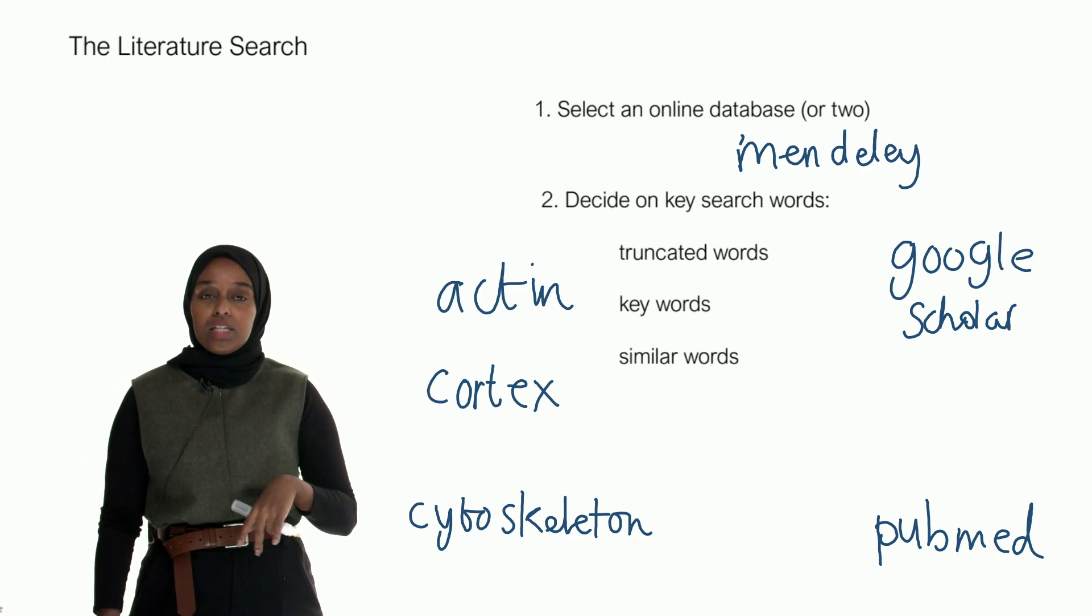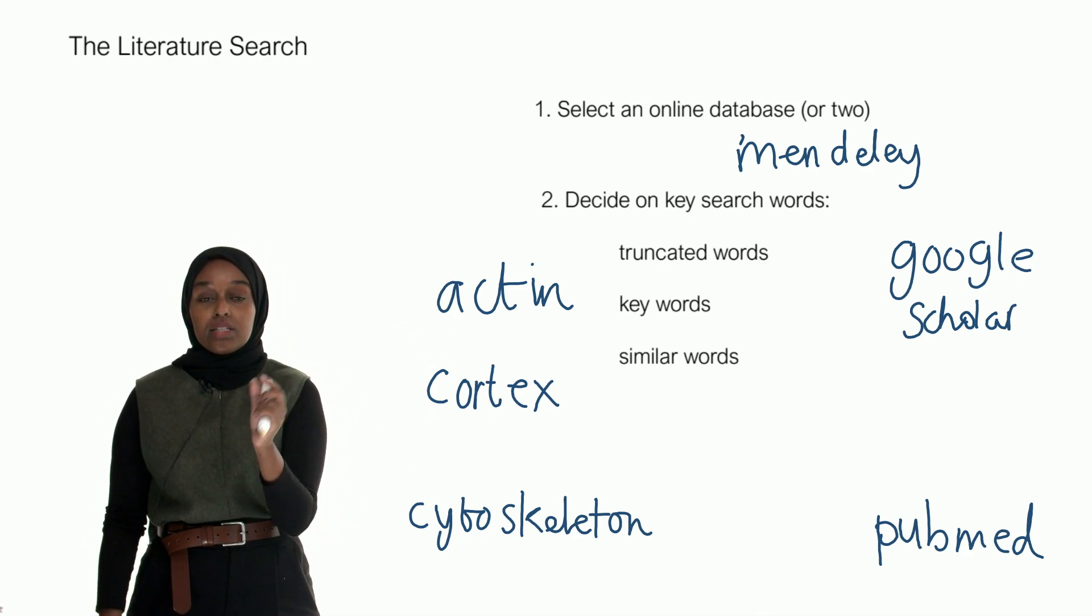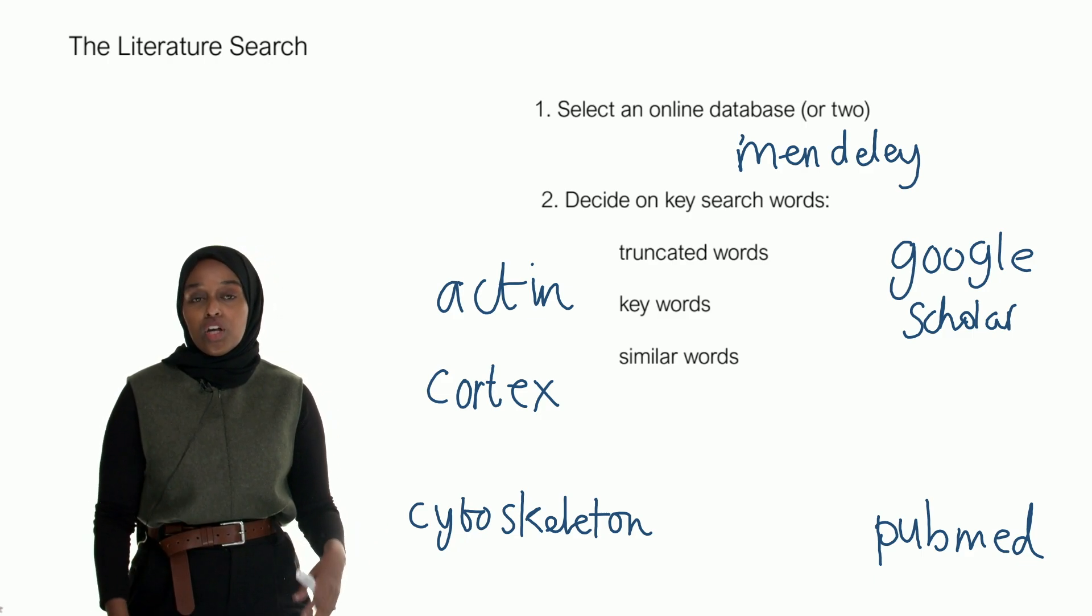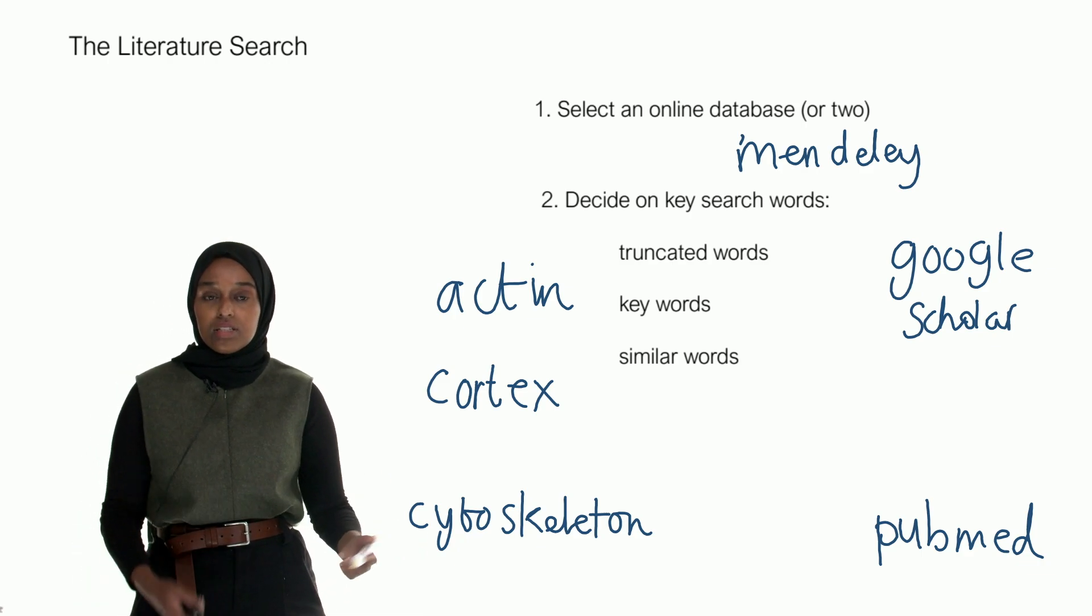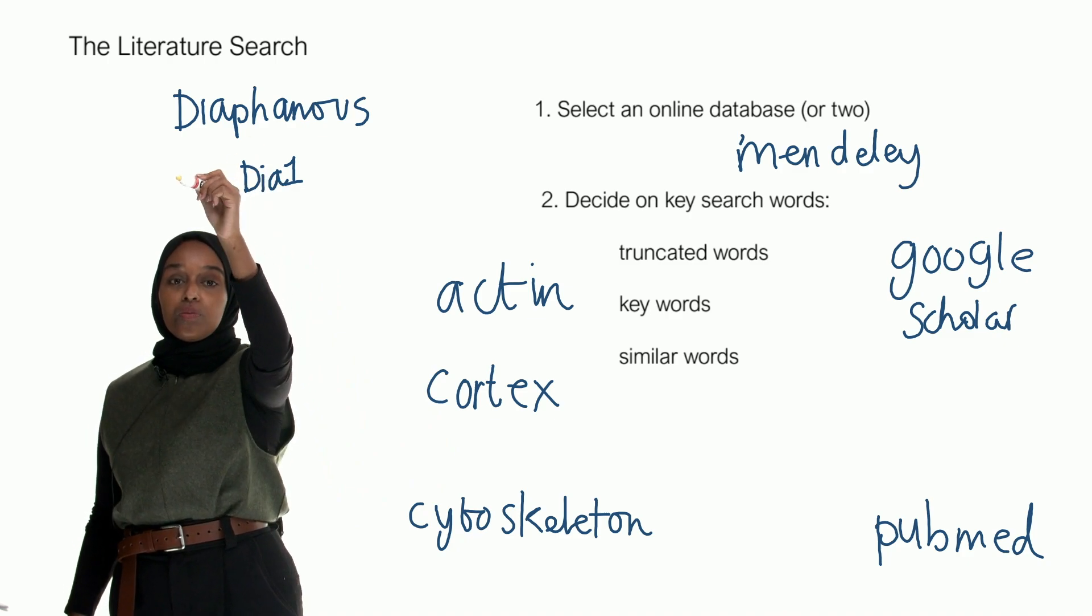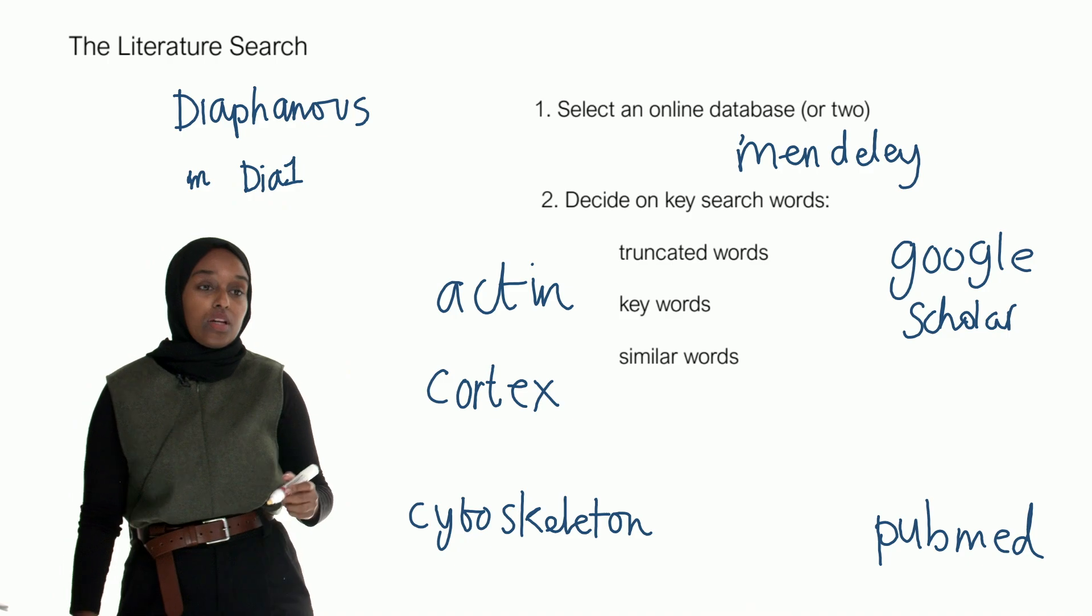Now, there are three types of keywords that you can go for. First is truncated words - short words that describe the same word that you're looking for. So for example, one thing that I used to look for was a protein called diaphanous. People would sometimes look for the truncated word, which in our case would be diaphanous 1, or sometimes mdia1.